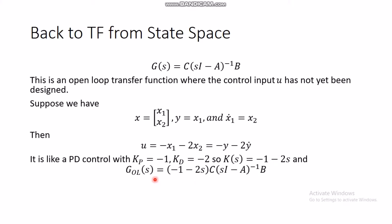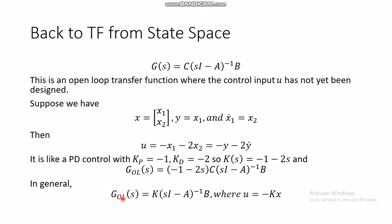In general, for any state space model with a designed controller u = -Kx, the open loop transfer function K(s)G(s) is given by K(sI - A)⁻¹B. You can verify this for the second-order example. The plant transfer function alone is C(sI - A)⁻¹B, while K(sI - A)⁻¹B gives the full open loop transfer function.